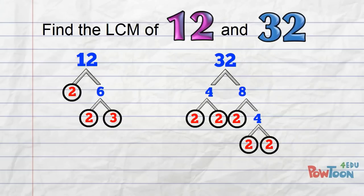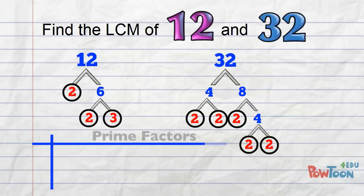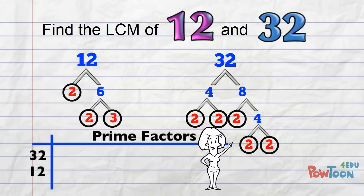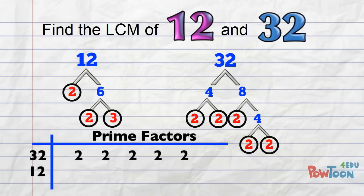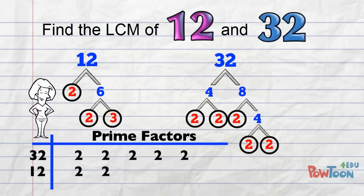Next, we make a quick table of the prime factors. Using columns, we match the like factors — leave a space where there's no match. 32 has the prime factor 2 five times; write them in. 12 has the prime factor 2 twice; I leave spaces and then put its remaining prime factor 3.